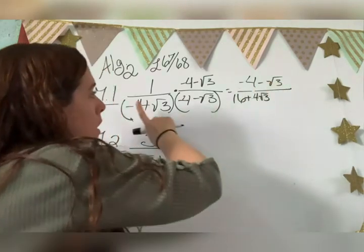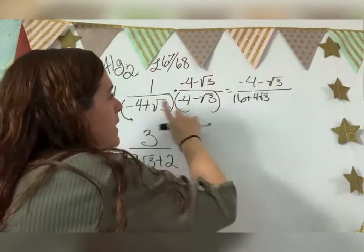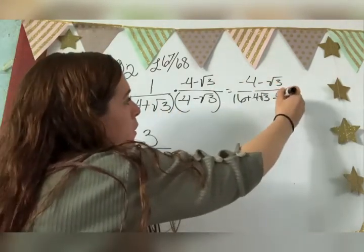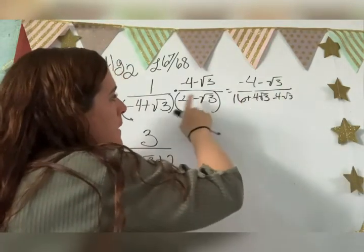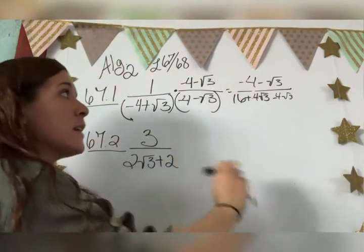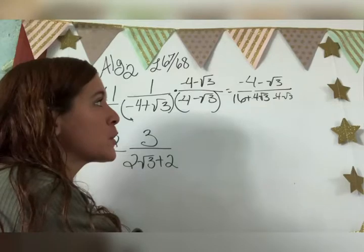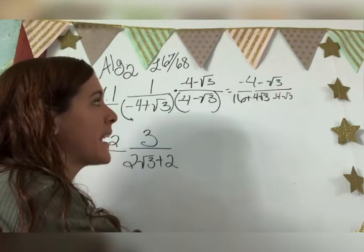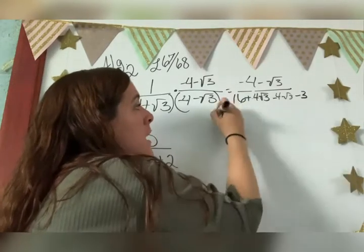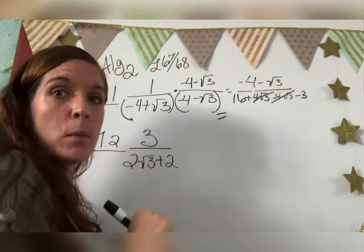This times this is gonna be negative 4 square root 3, and then this times this is gonna be negative square root 3 times square root 3, which means that your answer is going to be negative 3. Okay, and we are done with those two things.